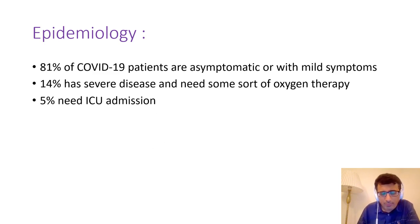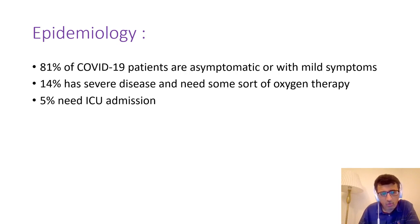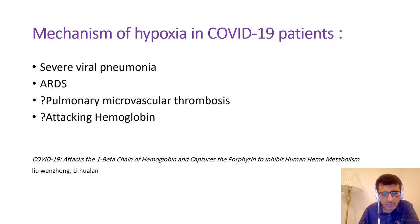SARS-CoV-2 is a very spreadable virus, and today we are talking about more than two million infected patients all over the world. The vast majority are asymptomatic or with mild symptoms that include mild pneumonia, and they recover — this percentage approaches 81%. The remaining 19% have severe disease and almost all need some sort of oxygen therapy. Five percent of them are critically ill, need ICU admission, and almost all need endotracheal intubation. So this is the 19% we will handle in this phase.